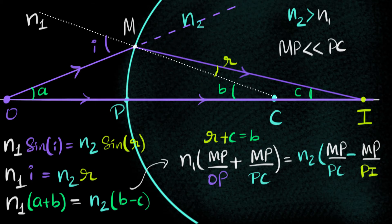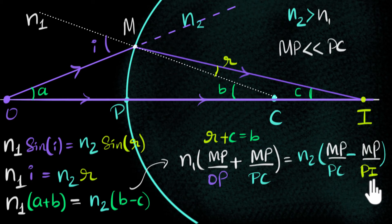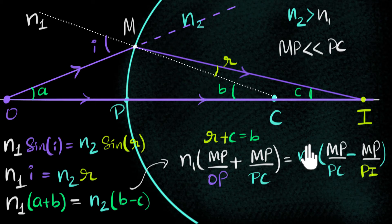We have found the relationship between object and image distances. Now we just make the expression cleaner. MP is common throughout, so it cancels out from both sides.